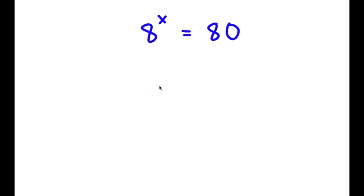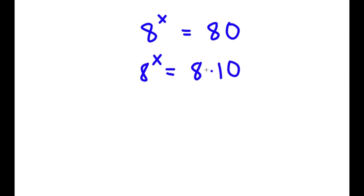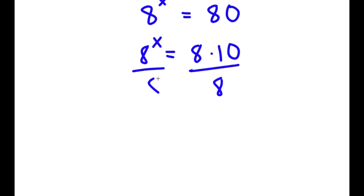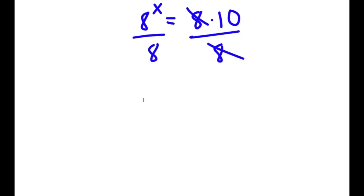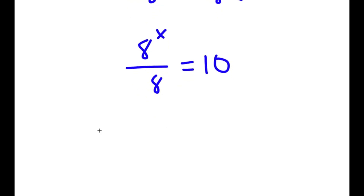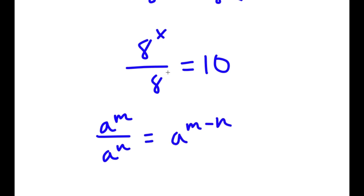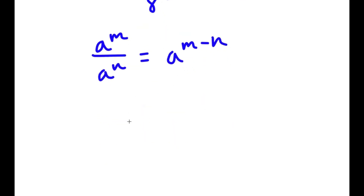In this problem, I have 8 to the power of x is equal to 80. To solve this, I'm going to first rewrite 80 as 8 times 10. So now I have 8^x equals 8 times 10. I'll divide both sides by 8, giving 8^x over 8 equals 10. Using the exponent rule a^m over a^n equals a^(m-n), this becomes 8^(x minus 1) equals 10.